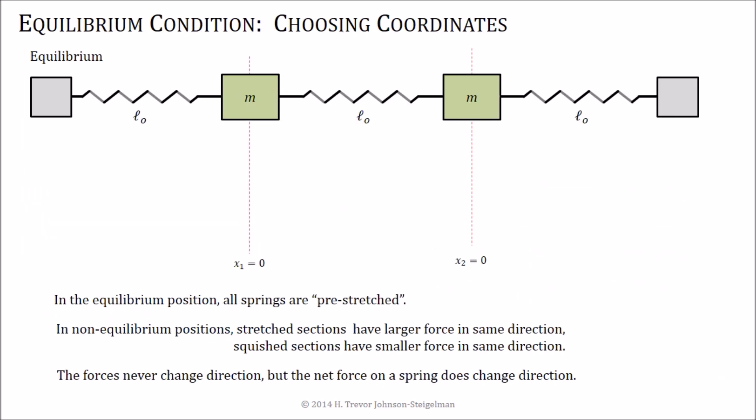So let's look at the setup for this, and let's start from looking at the equilibrium condition, and we're going to choose our coordinates from there. So in the initial setup, the equilibrium position, all springs are pre-stretched. So this spring on this side has a relatively shorter size than this stretched version, and because everything is in equilibrium, all three have the same stretch.